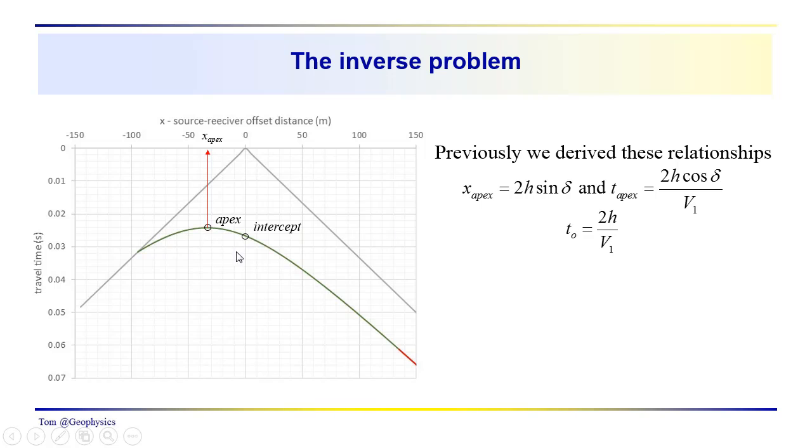For the apex, we have two values, two coordinates associated with the apex. But we do with the intercept as well, but x is equal to 0 there. But x apex is equal to 2h sine delta. t apex is equal to 2h cosine delta over v1.